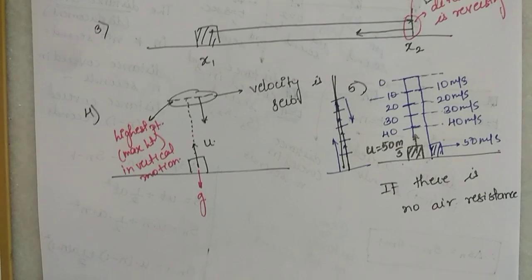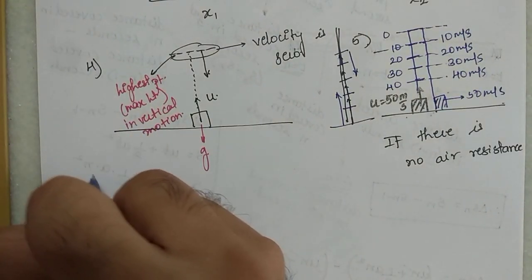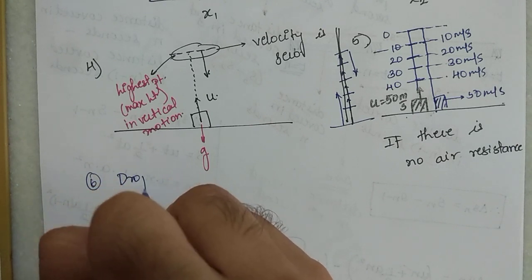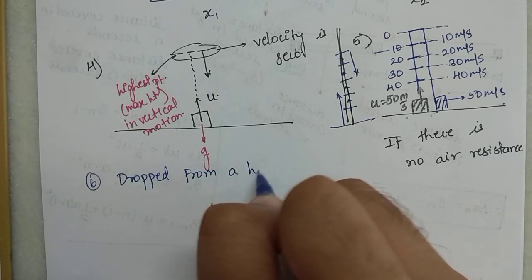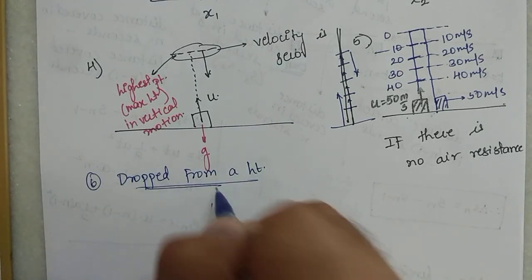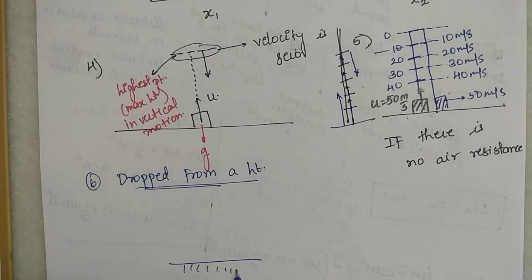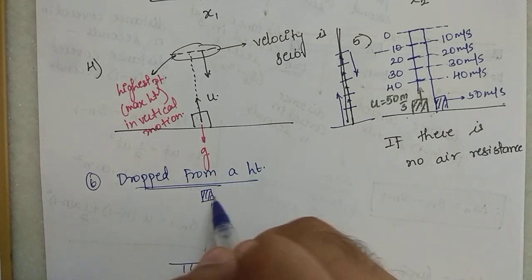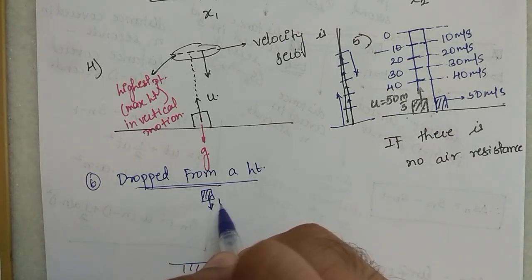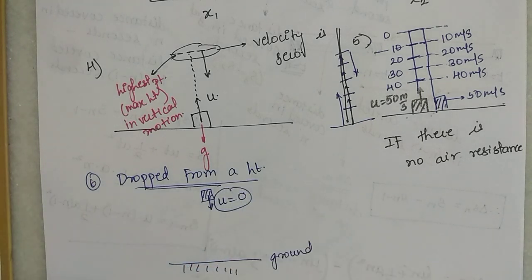Another commonly used term is 'dropped from a height.' When an object is dropped from a height, its initial velocity is taken as 0. So whenever this term is given, it indicates that the initial velocity of the object is equal to 0.